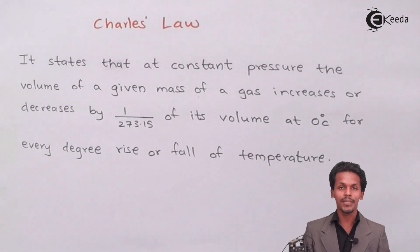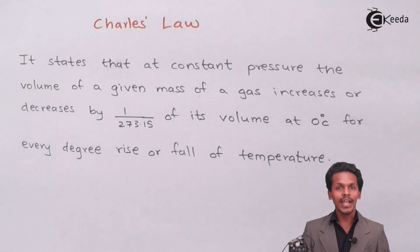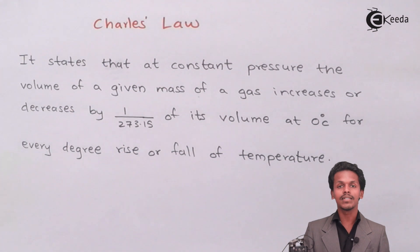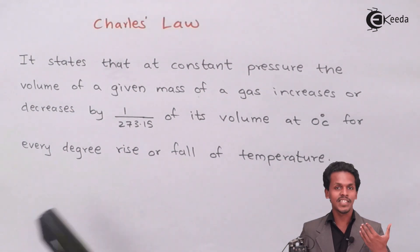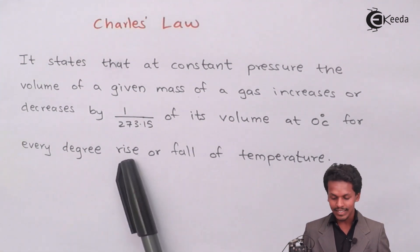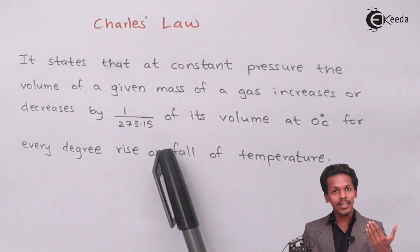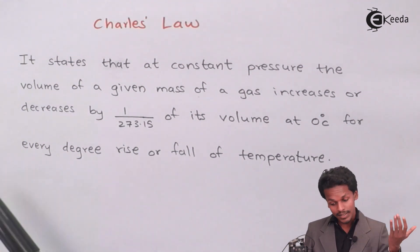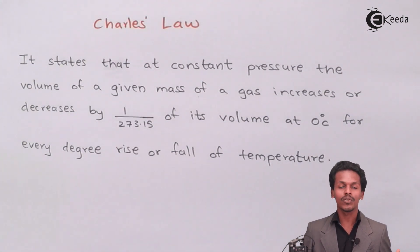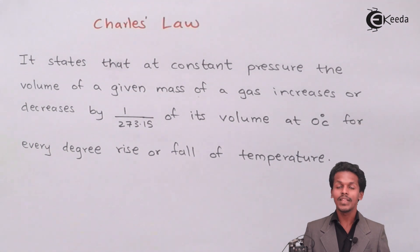It states that whenever at constant pressure, if a given mass of a gas is kept at a particular volume and if we increase or decrease the temperature, this will affect the volume of the gas. In simple words, if we increase the temperature from 0°C to a particular temperature, that will create a rise in the volume by 1/273.15, and if we decrease the temperature, there will be a fall in the volume also by 1/273.15. So the volume and temperature are both dependent on each other when pressure is kept constant.